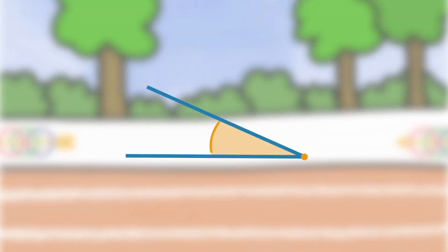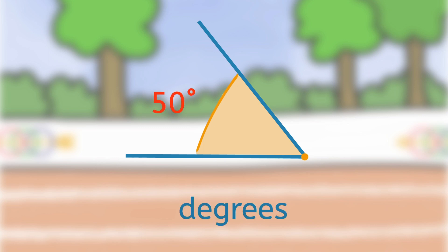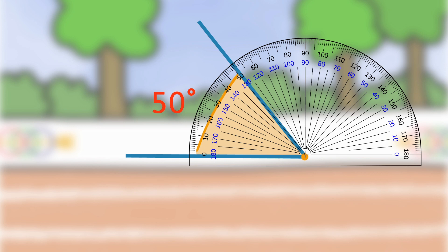An angle is the amount of turn between two lines joined at a point. Angles are measured in degrees. We use protractors to measure angles.